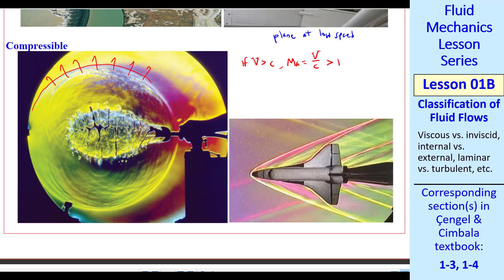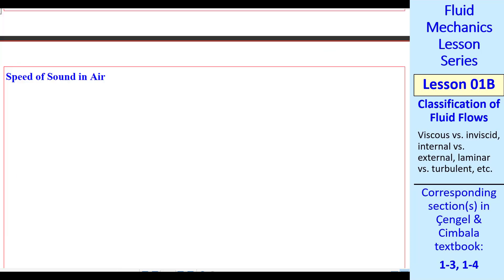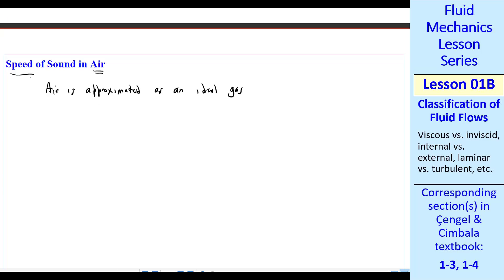If the velocity is greater than the speed of sound, the Mach number, which is V over C, is greater than 1. We call that supersonic. The supersonic flow is highly compressible. Here's an example of the space shuttle in a wind tunnel at a supersonic Mach number, and this is called an oblique shock. The wind tunnel here is operating at supersonic flow.